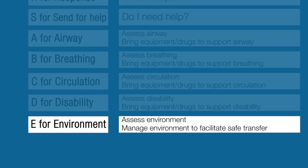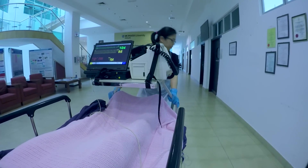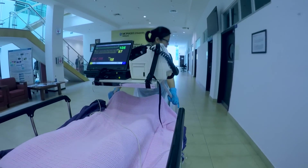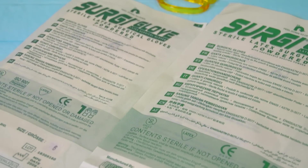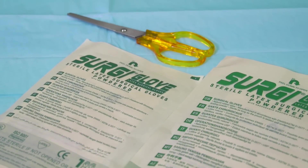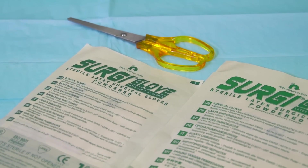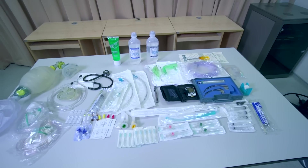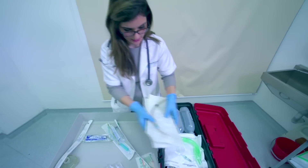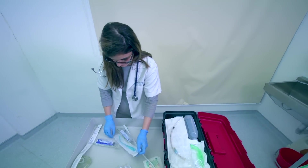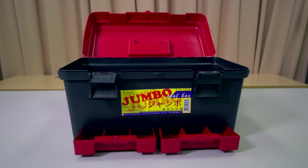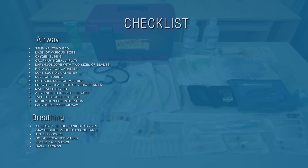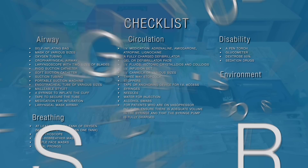Bring equipment to facilitate safe transfer. You will require a fully charged transport monitor that can display continuous ECG, automated blood pressure and saturation, extra gloves, a pair of scissors, and any other equipment needed to ensure patient safety. All equipment must be put into a transport bag. If you face constraints, you can use a large toolbox purchased from supermarkets at a very affordable price. The entire checklist is required for all levels of critically ill patients.